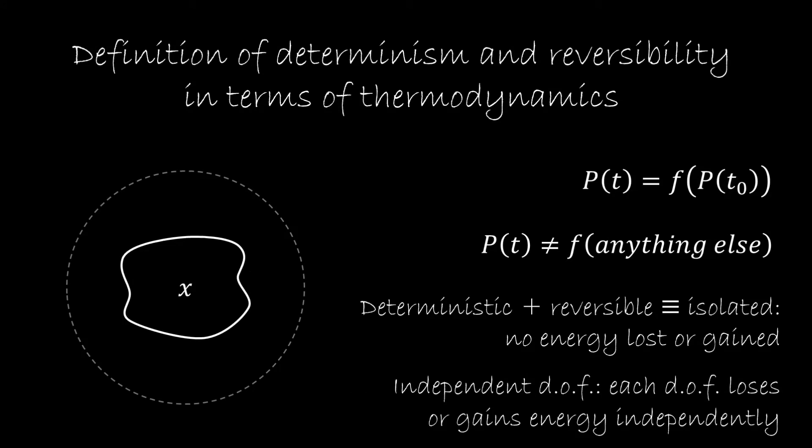Right now we'll see how the thermodynamics approach generalizes because it's the easiest one to do. So if you remember, we said that if the system is deterministic and reversible, the state at any point in time is a function of the state at any one time. This also means that the state is a function of only the system and not of anything else. Therefore, the deterministic and reversible system is isolated. There is no energy that is lost or gained.